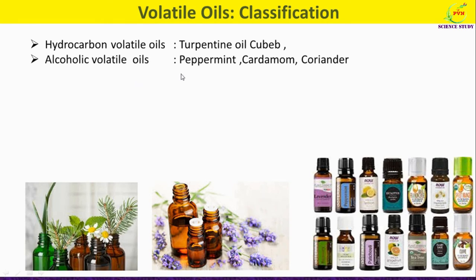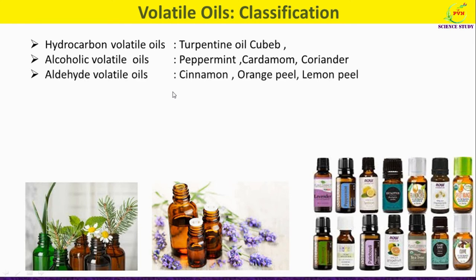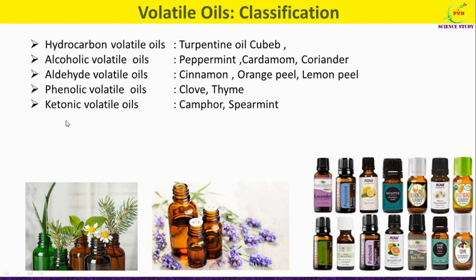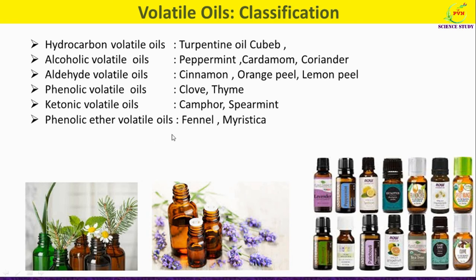The second group is alcoholic volatile oils — common examples are peppermint, cardamom, and coriander. Third is aldehyde volatile oils, seen in cinnamon, orange peel, and lemon peel. Fourth is phenolic volatile oils, found in clove and thyme. Next are ketonic volatile oils, common in camphor and spearmint. Next is phenolic ether volatile oils, common in fennel and Myristica.